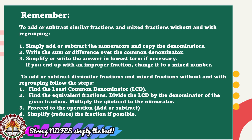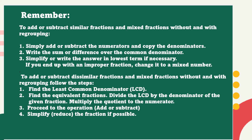Remember: To add or subtract similar fractions and mixed fractions, simply add or subtract the numerators and copy the denominators. Write the sum or difference over the common denominator. Simplify or write the answer in lowest term if necessary. If you end up with an improper fraction, change it to a mixed number. To add or subtract dissimilar fractions and mixed fractions, find the LCD, find the equivalent fractions by dividing the LCD by the denominator and multiplying the quotient to the numerator, proceed with the operation, then simplify or reduce the fraction if possible.